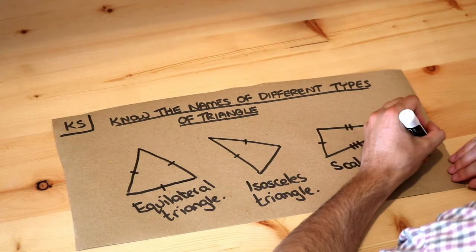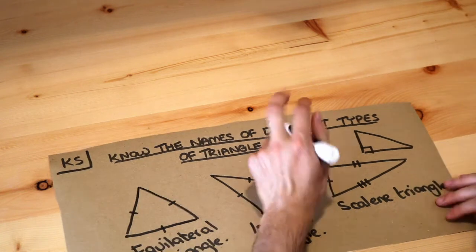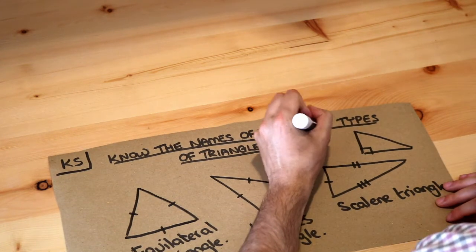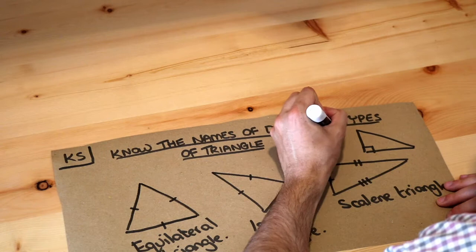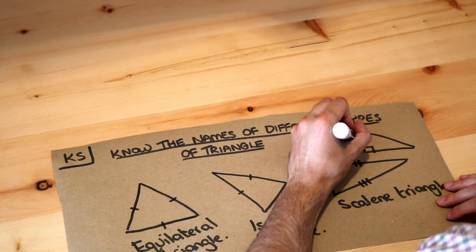And actually there's sort of really a fourth type as well. So if your triangle has a right angle within it, then it's known as a right-angled triangle, but right-angle triangles might be scalene or they might be isosceles.